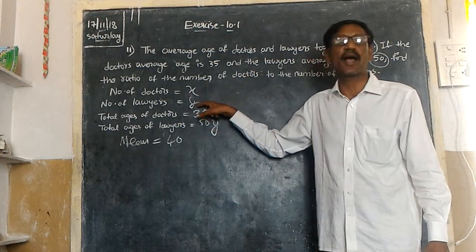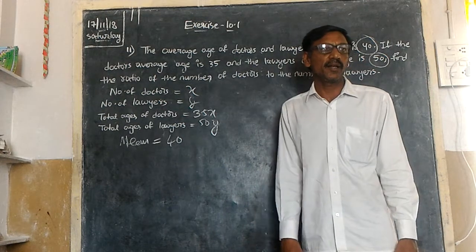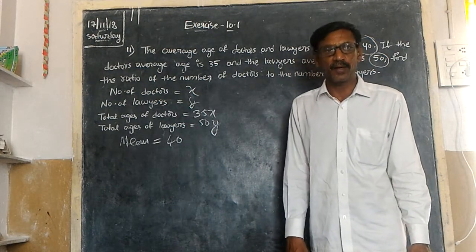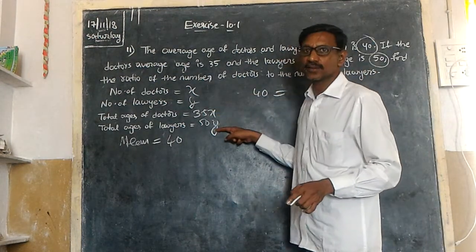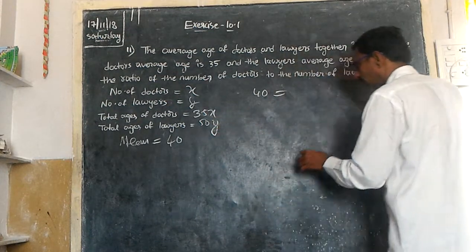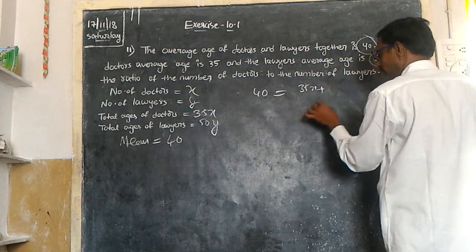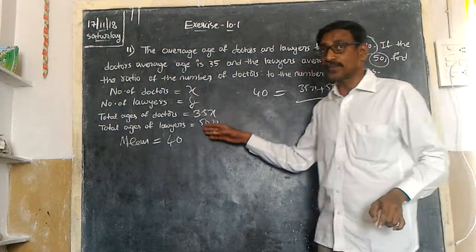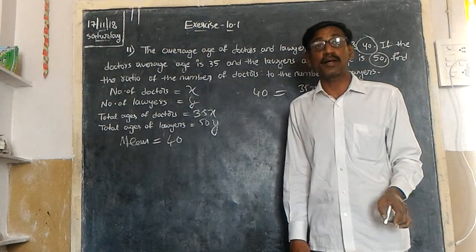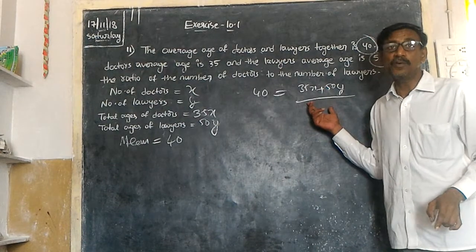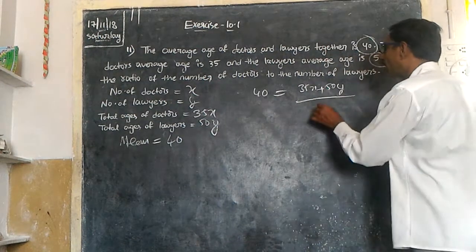Now we set up the average. Mean is equal to sum of observations divided by number of observations. The sum of all ages of doctors and lawyers is 35x plus 50y. The number of observations is the number of doctors and lawyers, which is x plus y.